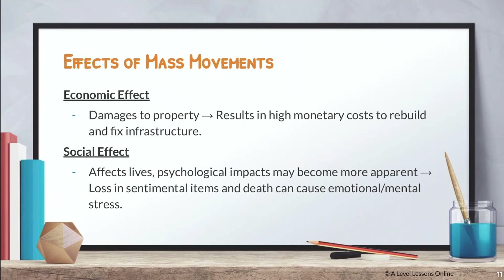Now we look at the effects of mass movements. These effects are combined and simplified. For essays, I recommend a case-study-driven approach — find a real past mass movement catastrophe and use its actual effects to substantiate your explanation. The first effect is economic: damages to property result in high monetary costs to rebuild and repair destroyed infrastructure.